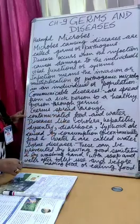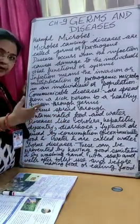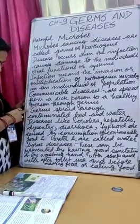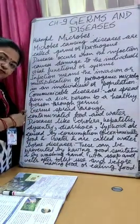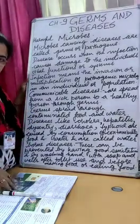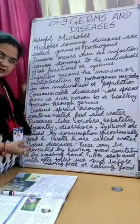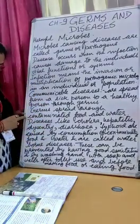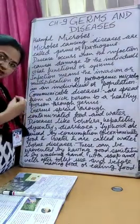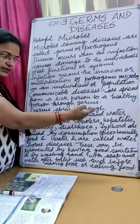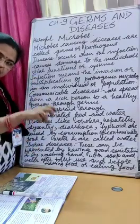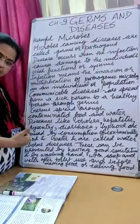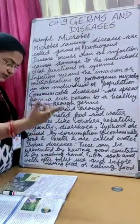Germs spread through contaminated food and water. There are different ways of spreading diseases, and the first way we are discussing here is through contaminated food and water. Contaminated means dirty, hazardous food and water which is going to cause harm to our body. When we consume these contaminated food and water, we get diseased because they contain germs. When we eat that food and drink that water, the germs get into our body and cause disease.